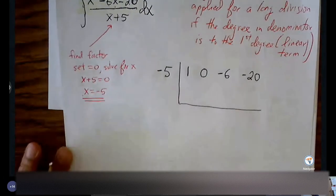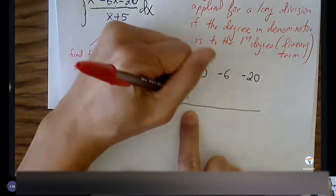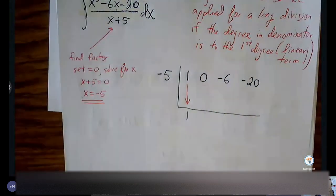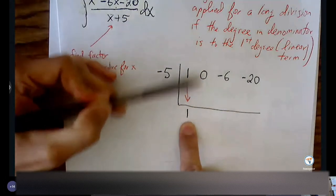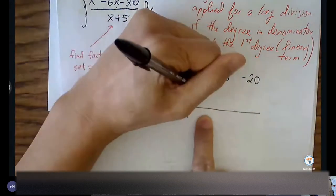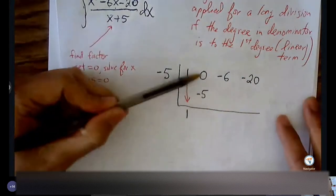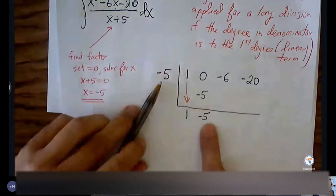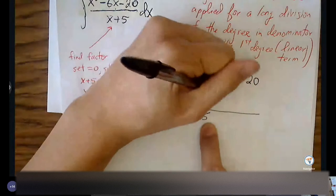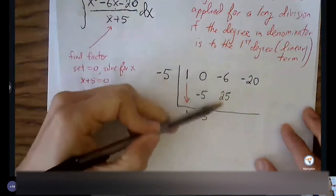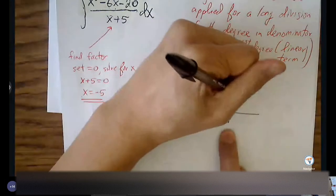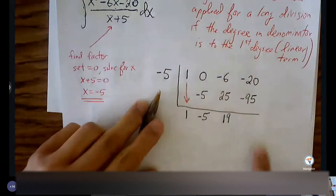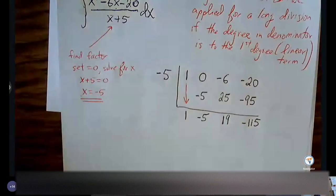Here is the rest of the process: bring the first number down below the line. Then multiply — negative five times one is negative five — and put that number in the second column above the line. Add: zero plus negative five is negative five, bring it below the line. Multiply: negative five times negative five is 25, put it below negative six. Add: 19, bring it down. Multiply again and add — getting negative 115. We recognize these numbers because we already did long division on this exact problem.